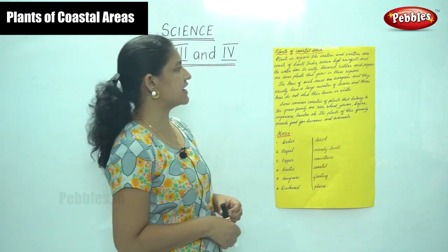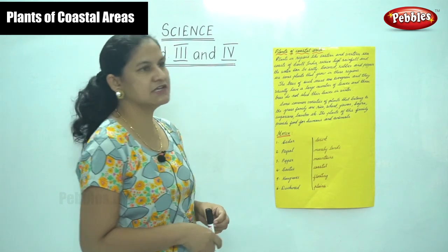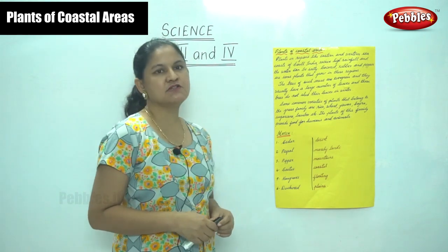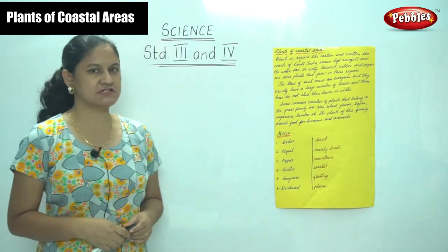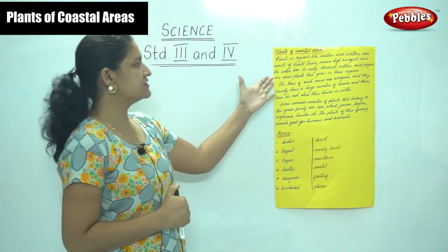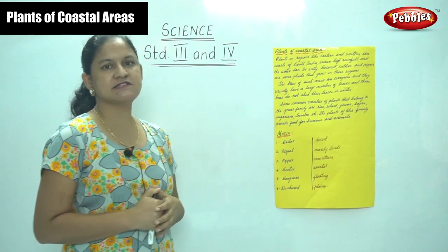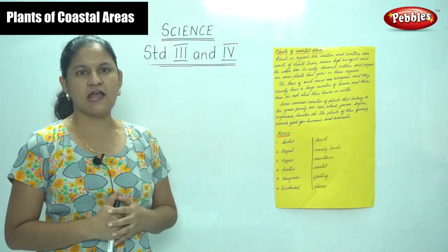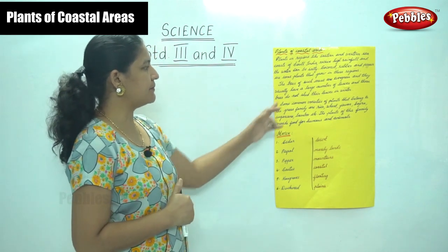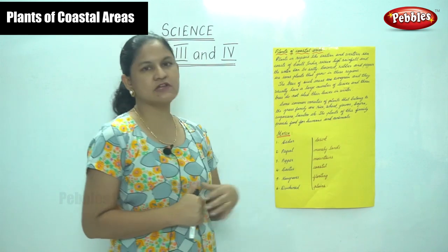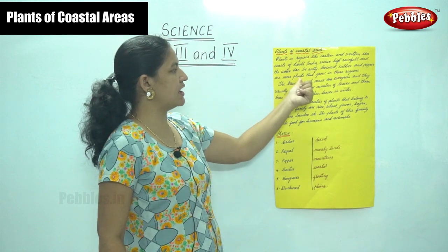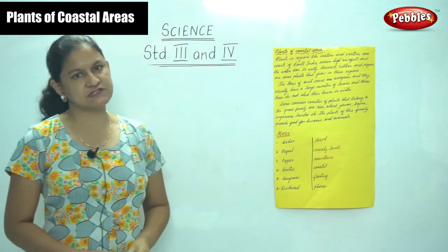Plants in regions like the eastern and western sea coast of South India receive very high rainfall and the water can be salty. Coconut, rubber, and pepper are some plants that grow in these coastal regions.